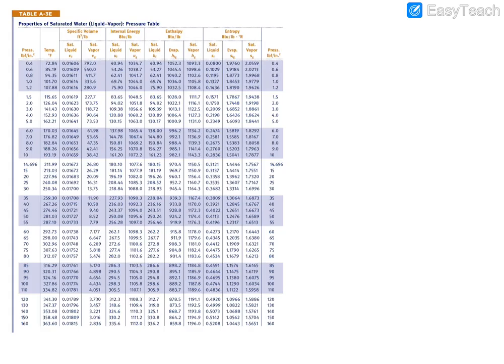If you turn to table A3E and go to 14.7 psi, which is atmospheric pressure by the way, and go to x equals 0, the saturated liquid specific enthalpy HF at 14.7 is 180.15 BTU per pound.